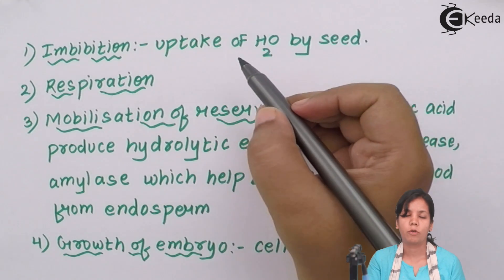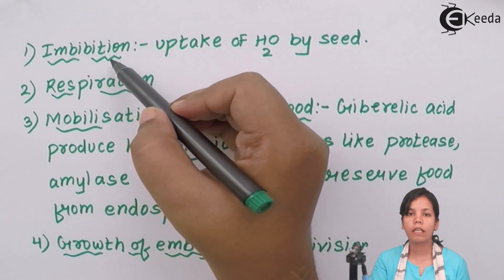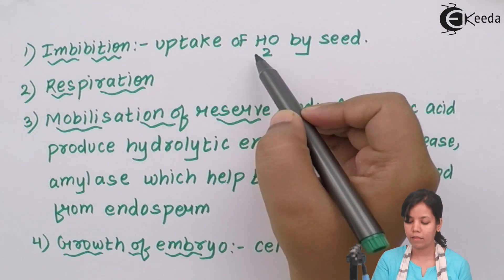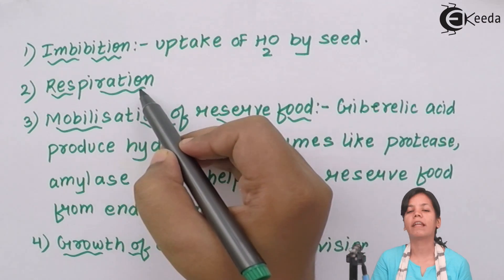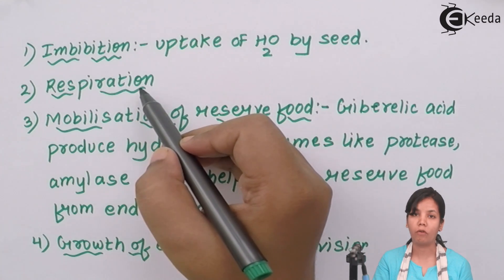The steps responsible for the growth of the plant are first imbibition, which is nothing but you water the plants or you put water to the seed. The second step is respiration. In respiration it means the whole process as we humans do it: the uptake of oxygen, the removal of carbon dioxide, the breaking of glucose, all this is respiration.